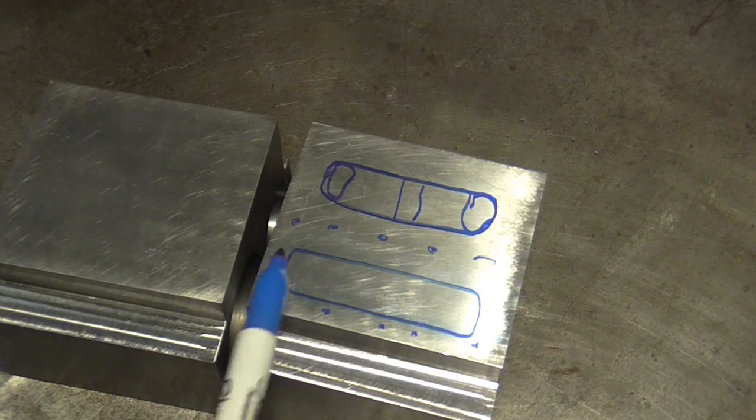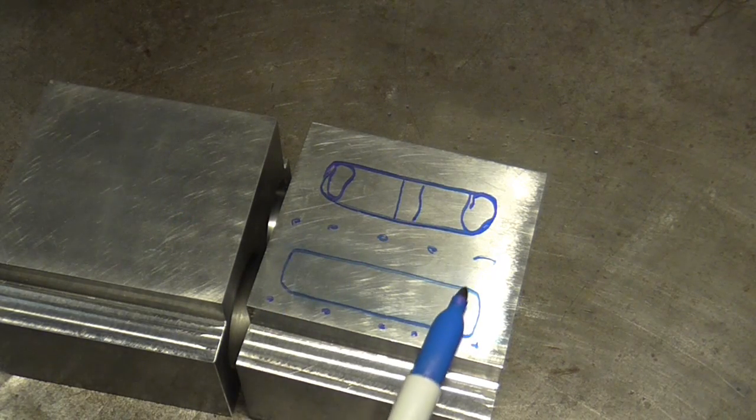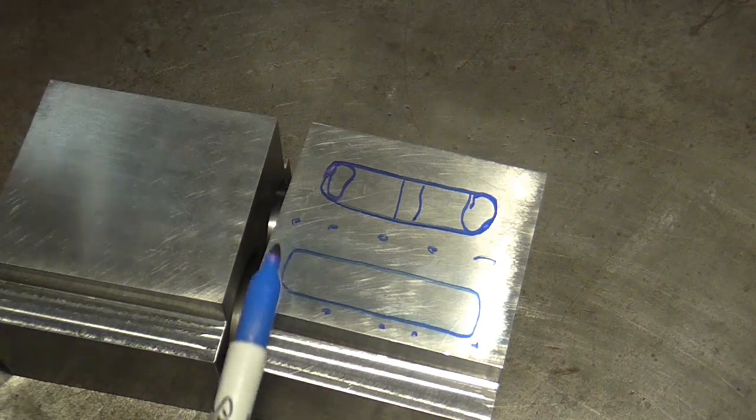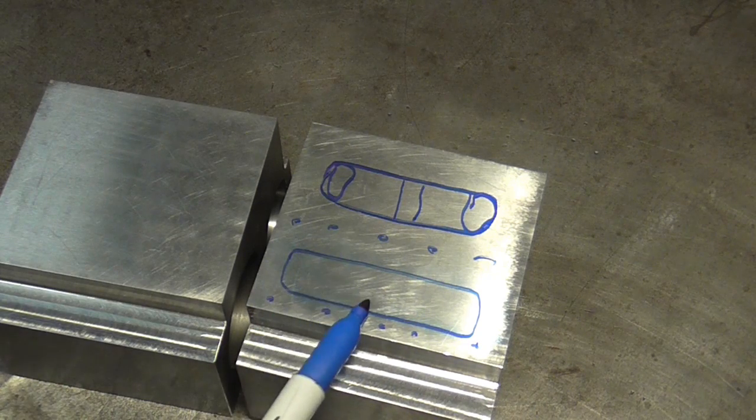I'm going to make a start by blowing these up and then scribing some lines on to give me a bit of guidance when I'm milling it. I'm going to start with these pockets on the back.